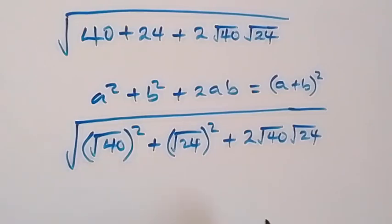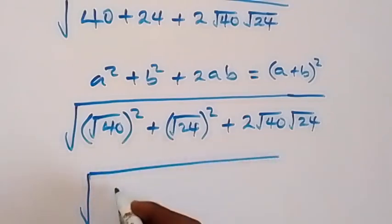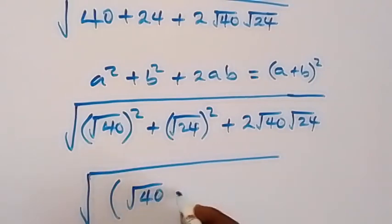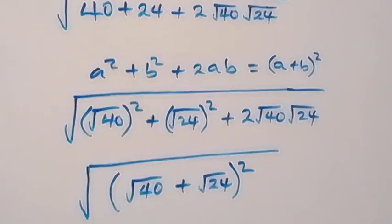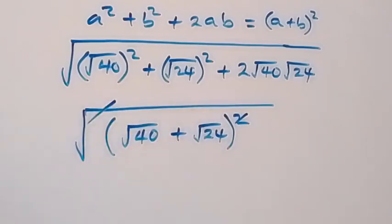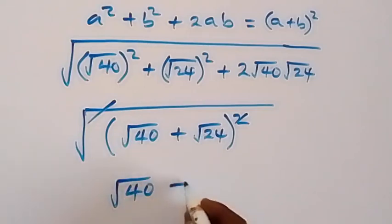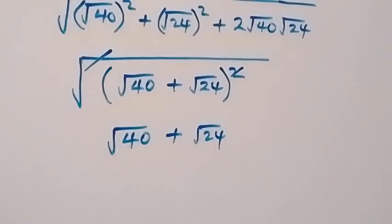This implies that a here is root 40 while b here is root 24. We can write this as square root of (root 40 plus root 24) squared. From here the square can cancel these square roots, so this reduces to root 40 plus root 24.